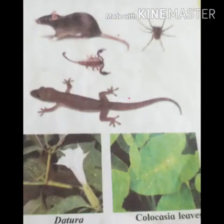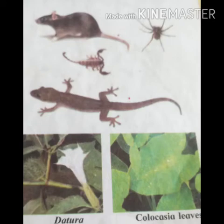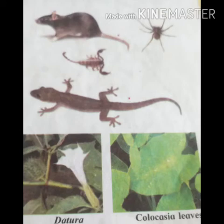Some living things are also harmful. Animals like mice and rats destroy our belongings. Mosquitoes, flies, and cockroaches spread diseases like malaria and dengue. Harmful plants include those like colocasia leaves, which cause itching, and the Tura plant, which is very poisonous.